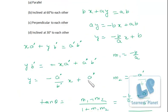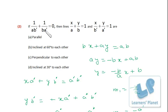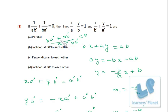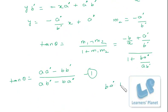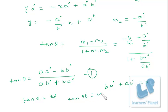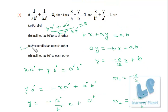We are given that 1/(ab') + 1/(ba') = 0. Simplifying: (ba' + ab') / (aa'bb') = 0, which means ba' + ab' = 0, since the numerator must be 0 and the denominator cannot be 0. So tan θ = (aa' - bb') / 0, which is not defined. That means θ = 90°, because tan 90° is infinity. So the lines are perpendicular to each other.